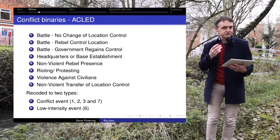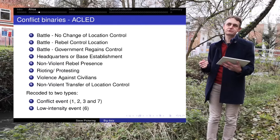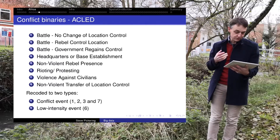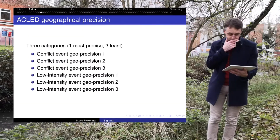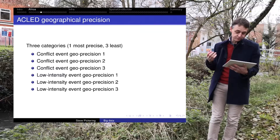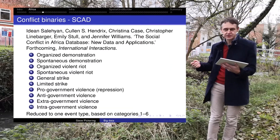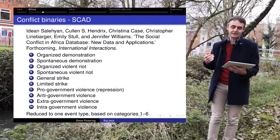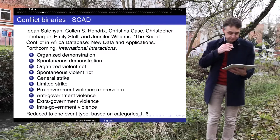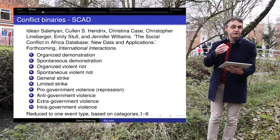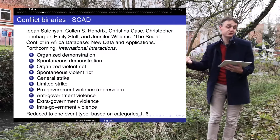For our conflict data, one source is ACLED. We've taken all the types of conflict variables they had and recoded them to two types: a conflict event and a low-intensity event. ACLED data have three levels of geographic precision and we've gone with the most precise available. As a robustness check, we also use another conflict dataset called SCAD — the Social Conflict in Africa Dataset, put together by Salehyan and Hendrix et al. From that we've taken the first six types — demonstrations, riots and strikes — because that's what we're interested in.